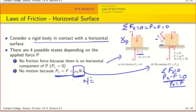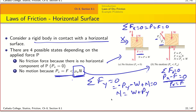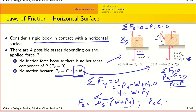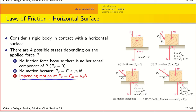To find the normal force, we write sigma Fy = 0. We have Py acting down, negative W, and normal force N acting up, giving N = W + Py. So our maximum static friction force is FM = μs · N = μs · (W + Py). Clearly in case two, Px is less than this maximum force, so we haven't reached the point of impending motion yet.